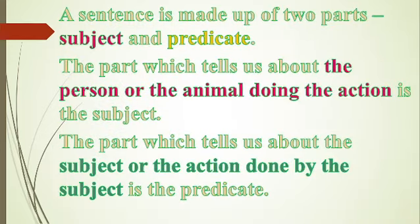A sentence is made up of two parts: subject and predicate. The part which tells us about the person or the animal doing the action is the subject. The part which tells us about the subject or the action done by the subject is the predicate.